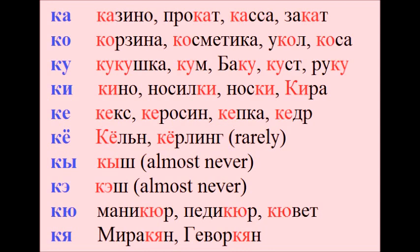Ko – корзина, косметика, укол, коса. Ku – кукушка, кум, баку, куст, руку.